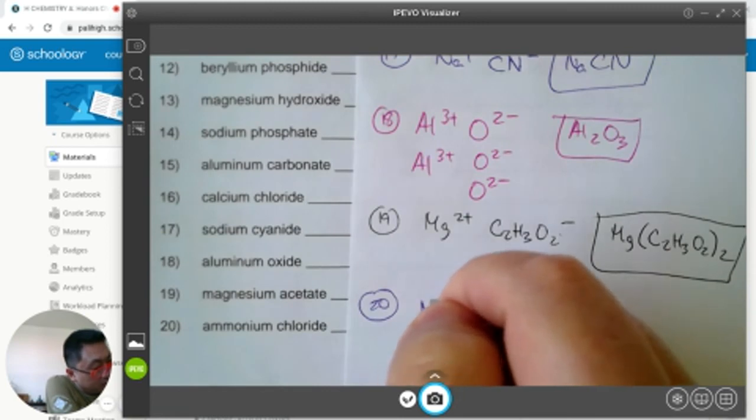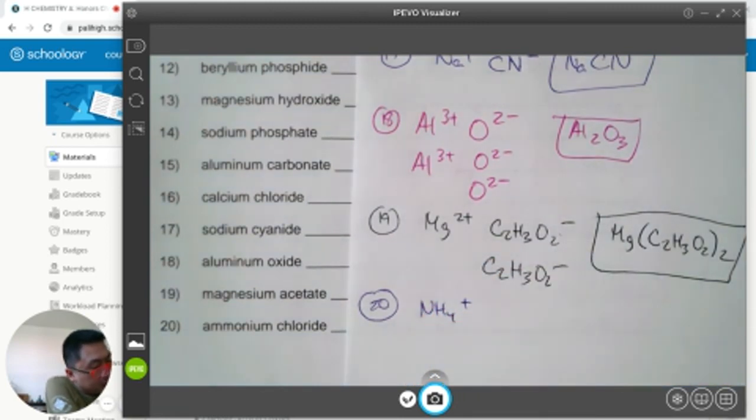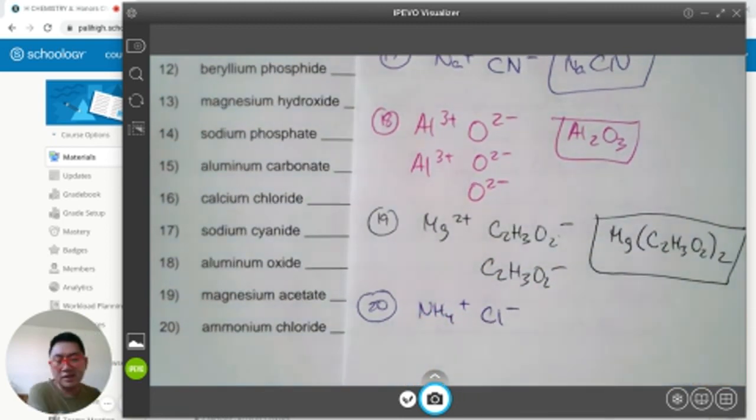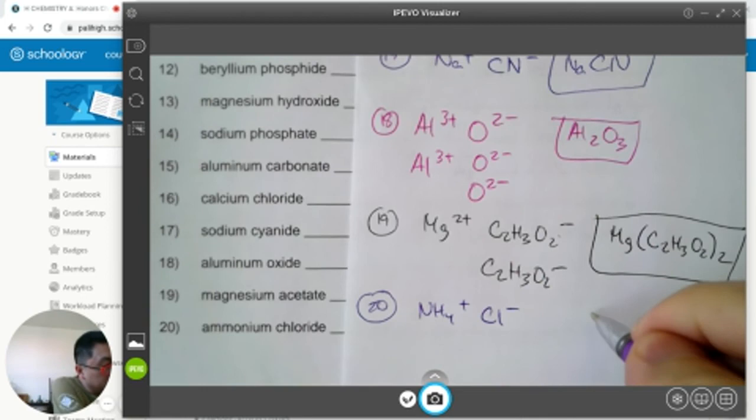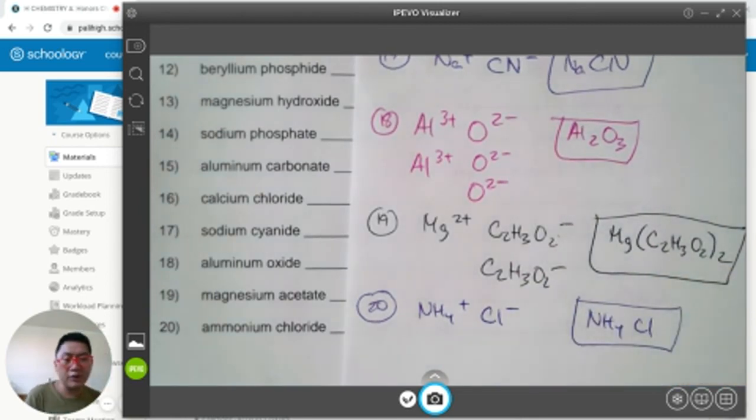Number 20, the last one. Ammonium, which is NH4 plus. Chloride, which is Cl minus. What's the formula of ammonium chloride? Just NH4Cl. Done. Because positive 1, negative 1 adds up to 0. We're done.